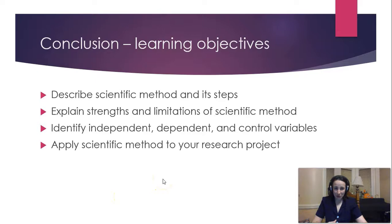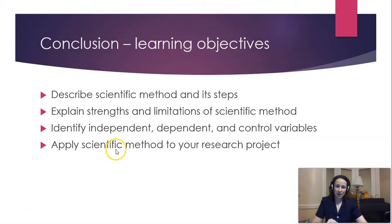In conclusion, by now hopefully you're able to describe the scientific method and its six steps. You can explain the strengths and the limitations of the scientific method so you know what kinds of questions are appropriate. You can identify what an independent, dependent, and control variable is, and you can apply the scientific method to your research project — I'll be looking for that.